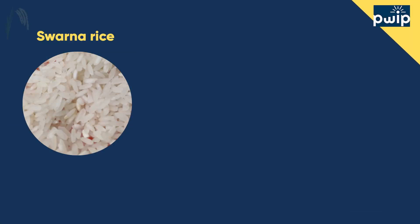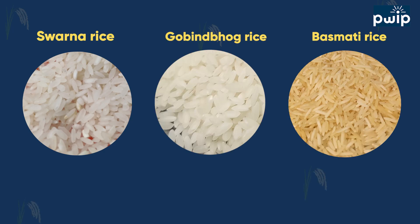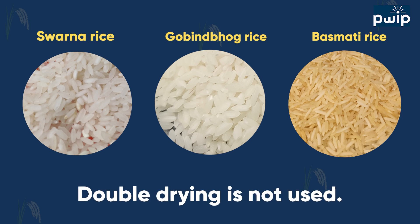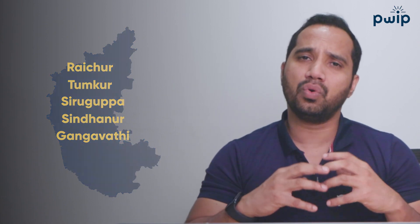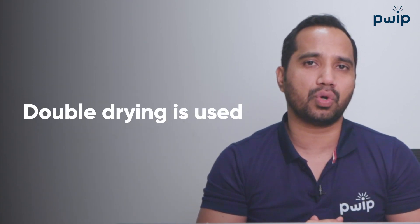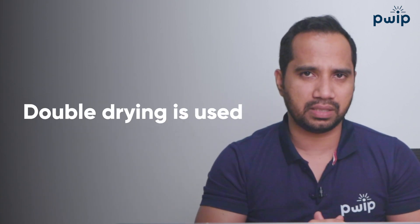For example, if you're talking about Swarna rice or any other rice like Govindabhog or Basmati, double drying is not common. But specifically in regions like Raichur in Karnataka, Tumkur in Karnataka, Siraguppa, Zindanur, Gangavati in Karnataka — where good quality Sona Masuri rice is milled — this double drying concept is more commonly seen.